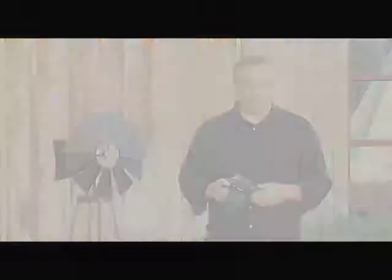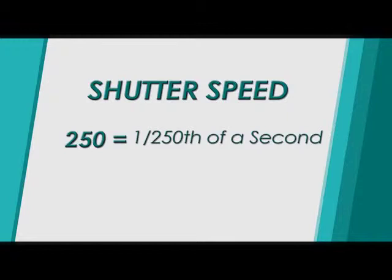Shutter speeds are measured in seconds and fractions of seconds. They're indicated on your camera with numbers like these. The number 250 actually means 1/250th of a second, which is how long the shutter will stay open when you press the shutter button. The number 60 means 1/60th of a second. The number 2 means half of a second. And the number 1 with quotation marks means that the shutter will be open for one full second. Keep in mind, when a shutter speed number is followed by quotation marks, it means that the number represents full seconds.